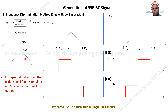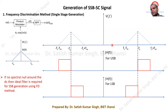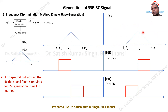After multiplying the message signal with the carrier, we get a product signal V(t). The Fourier spectrum of this time-domain expression shows that the message signal spectrum is shifted around the carrier frequency FC. Because we are suppressing the carrier, the carrier component will not be present. The resulting spectrum varies from FC−FM to FC+FM.